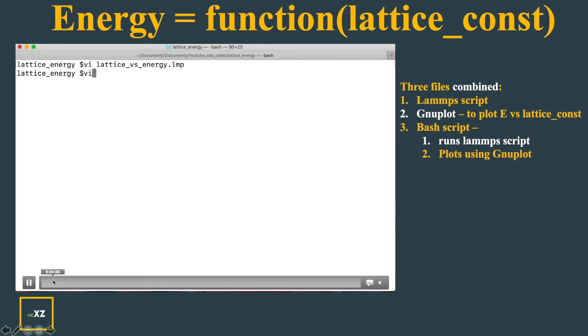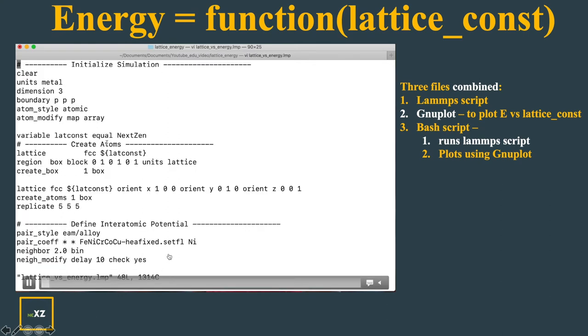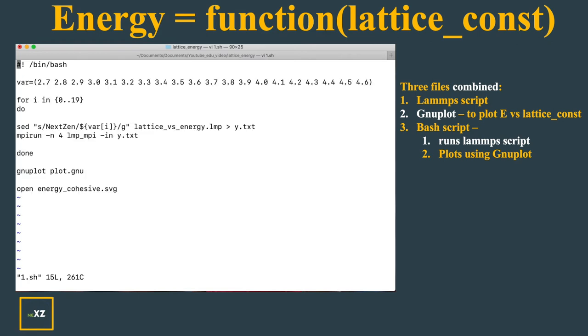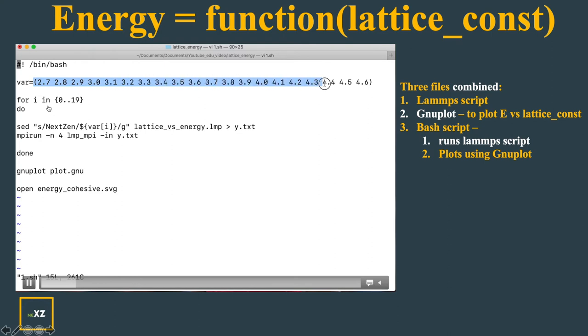Let's check that out. If you see this is the script. Here if you see the lattice constant equals to nextzen. Now what I do is I go back and I open the bash script. In the bash script, if you see the variable I change from 2.7 to 4.6 and for pure nickel the stable lattice constant is 3.52 somewhere around here.